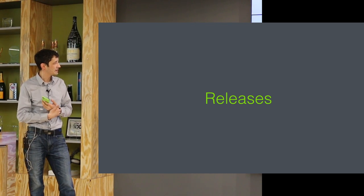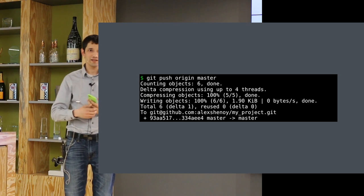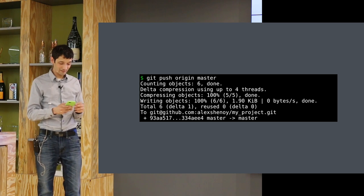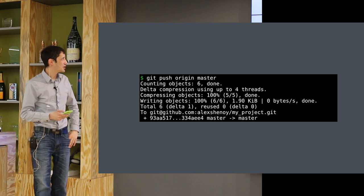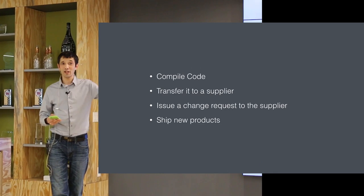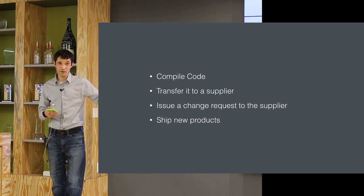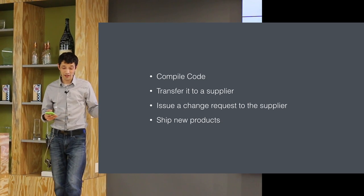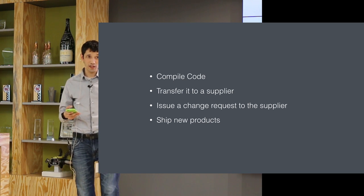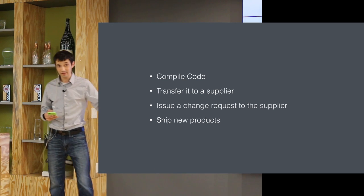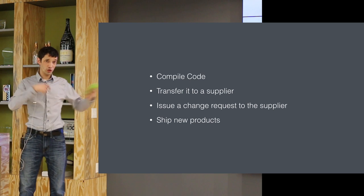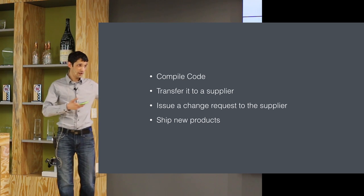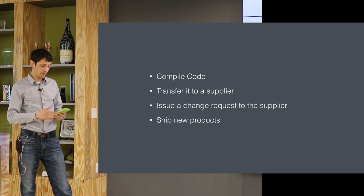On the web, releases look like: push to master, Jenkins builds it, you deploy with cap deploy — maybe it's one line. For embedded systems, you compile your code, transfer it to a supplier, issue a change saying 'use this new code,' then that chip goes onto a product that goes to customers. The turnaround might be a week from when I compile the code to it getting into a product, or months before it's actually deployed. That goes back to the whole 'slow down' piece — my workflow is much longer.